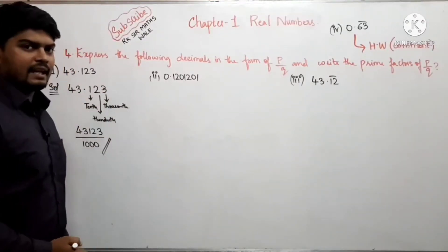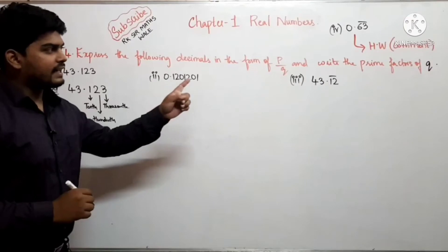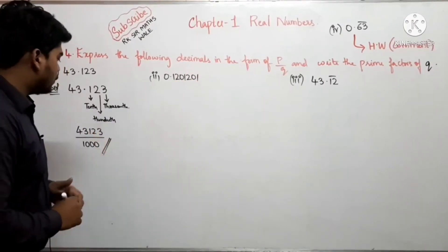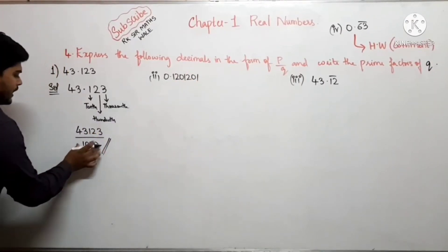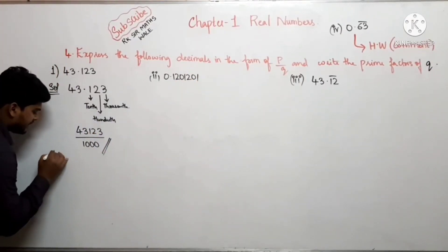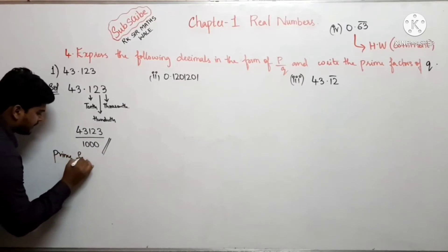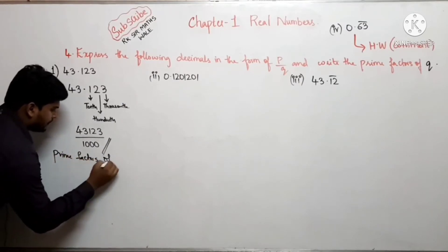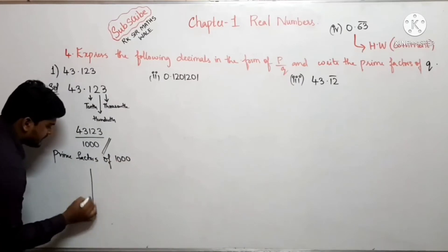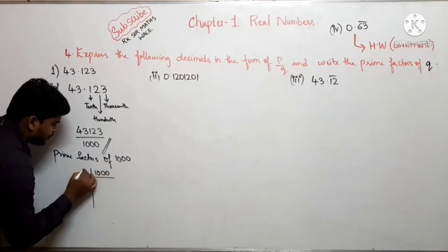अब हमें कहा गया था: write the prime factors of q। यहाँ पर q है 1000, तो prime factors निकालते हैं 1000 के।